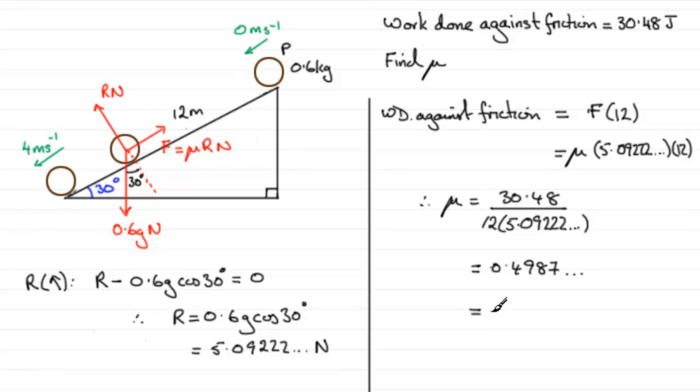And if you round it, say to two decimal places, that's going to be 0.50 to two decimal places. So I hope that's given you some idea, and if you did have a go and got it right, well done.